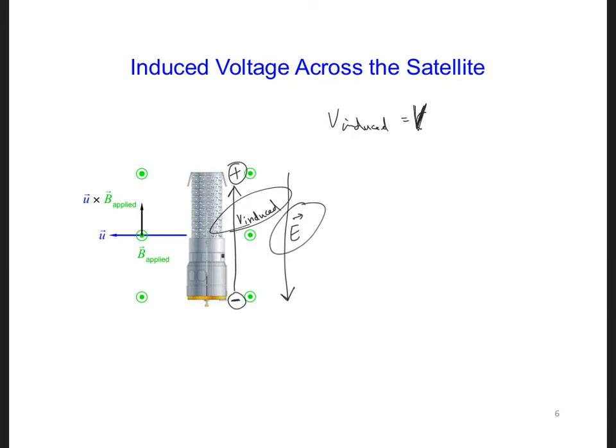So we have V induced is equal to V EMF, and that is equal to integrating along L, which is the length of the satellite, E dot dL.